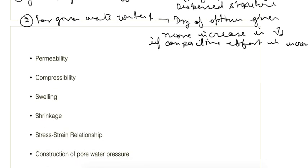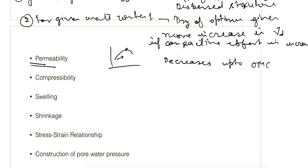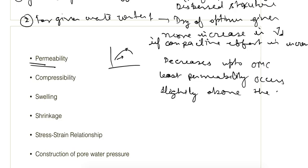The next point is permeability. When water content is increased, the permeability of the soil decreases. This is true up to OMC, or you can say the least permeability occurs slightly above the OMC. After the OMC, the permeability starts increasing because the particles are displaced and water starts entering into those pores.